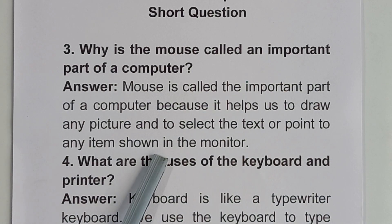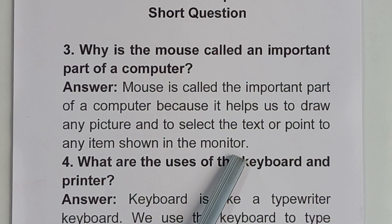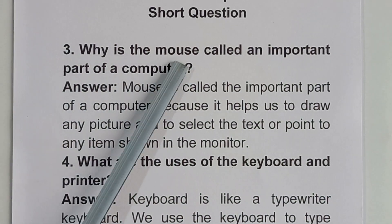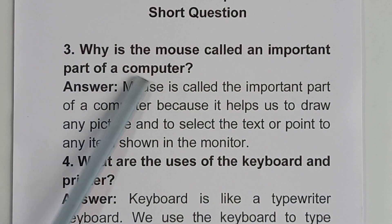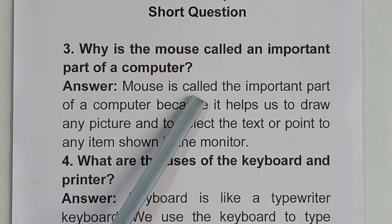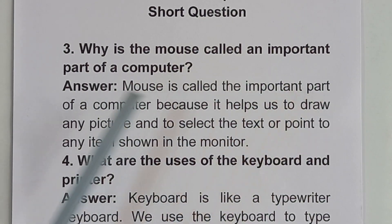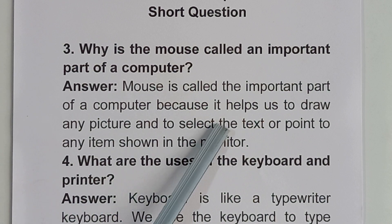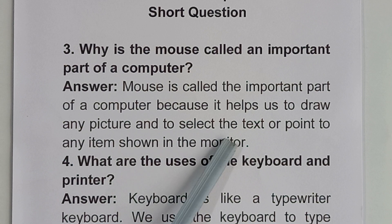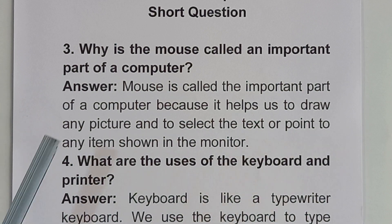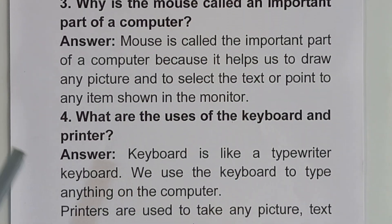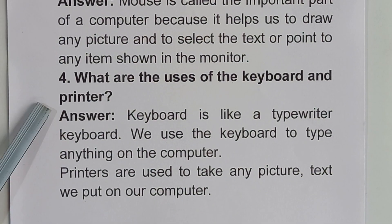To repeat: Why is the mouse called an important part of a computer? Mouse is called the important part of a computer because it helps us to draw any picture and to select the text or point to any item shown in the monitor. Now we will go to short question number 4.